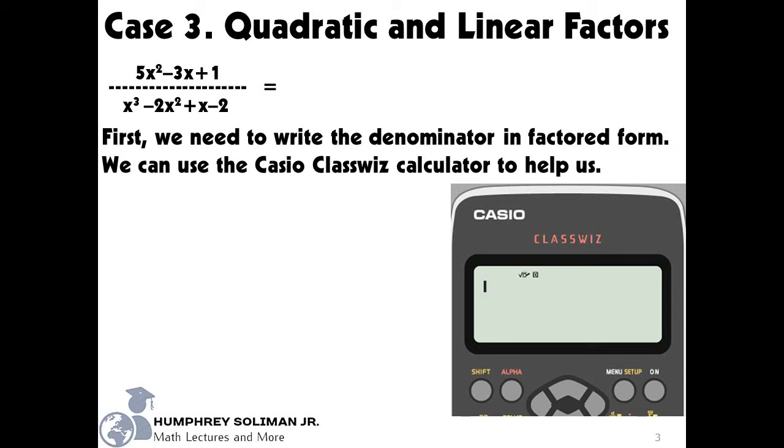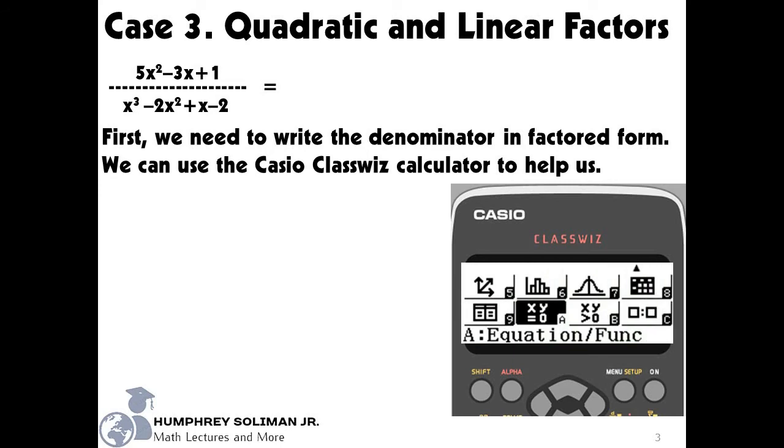Our first step is to write the denominator in factored form. We can use the Casio ClassWiz calculator to help us, and we have to put it in equation mode. We can do this if we press the menu key and look for equation mode by using the direction keys.